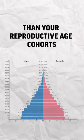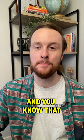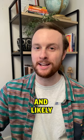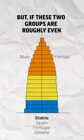If the pre-reproductive age cohorts are significantly larger than the reproductive age cohorts, you get this dramatic pyramid shape, and you know that you have a country with a high birth rate and likely a high population growth rate.